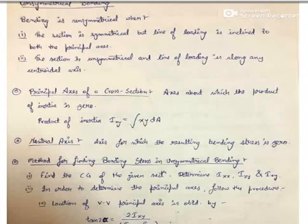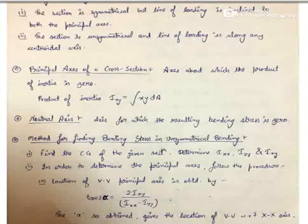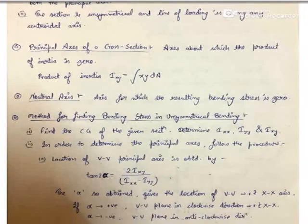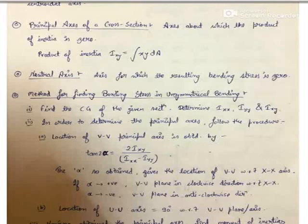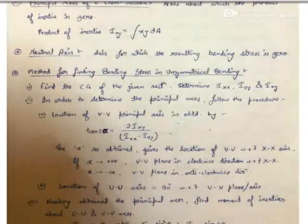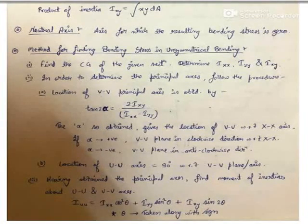Having obtained Ixx, Iyy, and Ixy, we determine the principal axes using the formula: tan(2α) = 2·Ixy / (Ixx − Iyy), which is similar to the principal stress and strain concept. Here alpha is the location of the VV principal axis with respect to the horizontal xx axis. Having obtained alpha, the VV principal axis location is found, and the UU axis is perpendicular to VV. The formula for IUU is Ixx·cos²θ − Iyy·sin²θ + Ixy·sin(2θ), where theta is taken with its sign.